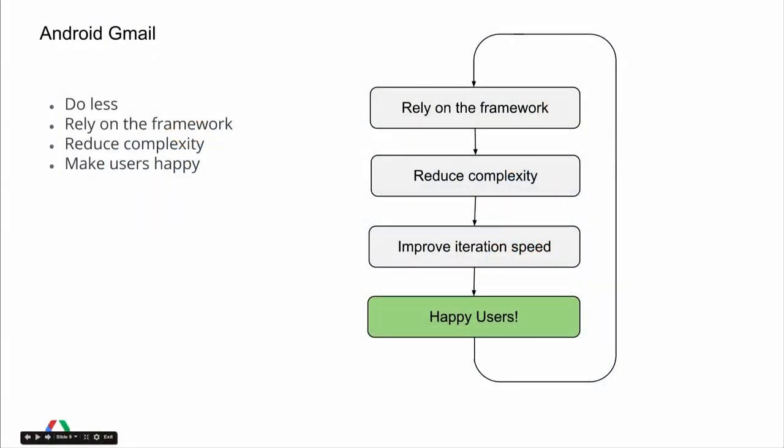Our overall approach is to rely on the framework very heavily. The more that the framework does, the less that we have to do. This means complexity in our code base is reduced, which allows us to iterate faster on features and squash bugs quicker. The less complex your code is, the quicker you can iterate, and if you rely on the framework for those features, you can iterate even faster on the next feature.